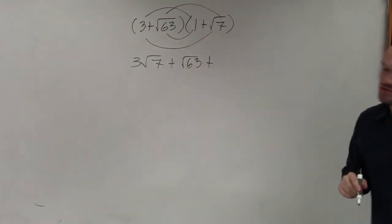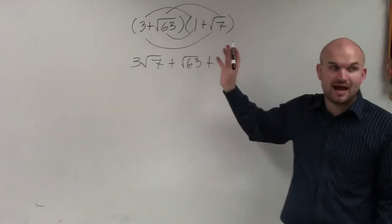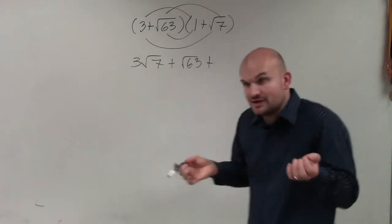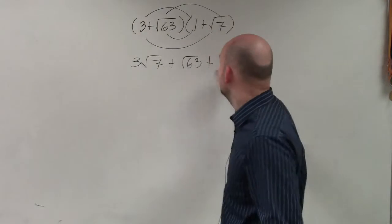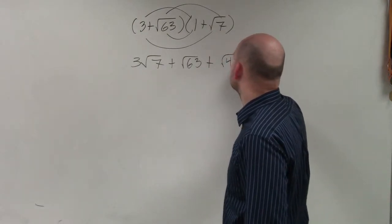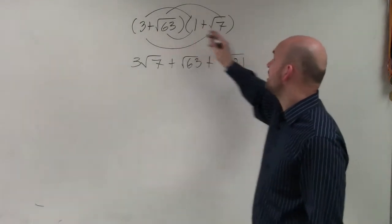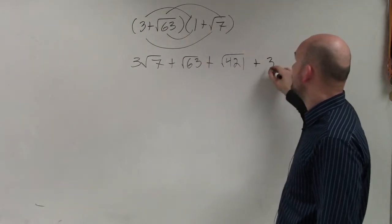Plus the square root of 63 times the square root of 7. When you're multiplying two radicals, and since they're both square roots, their index is the same, we can just multiply them. So 63 times 7 is going to be the square root of 421. And then 3 times 1 is going to be a positive 3.